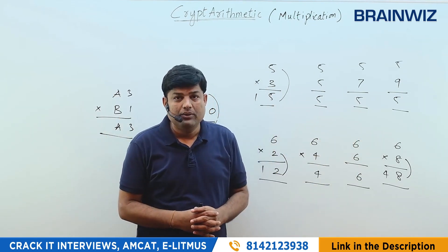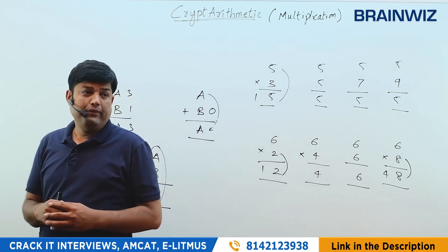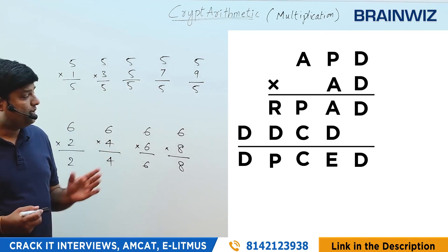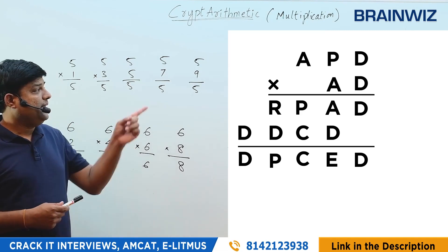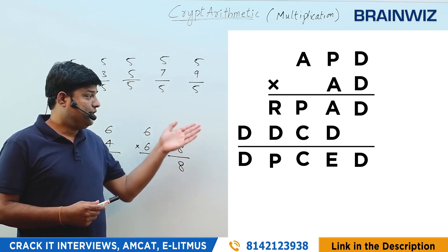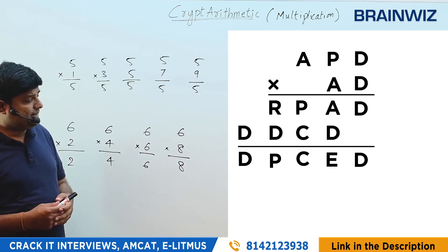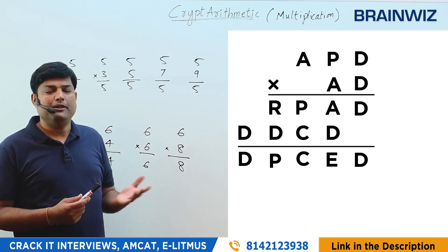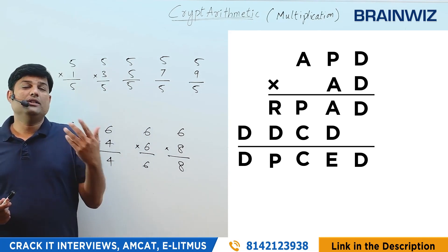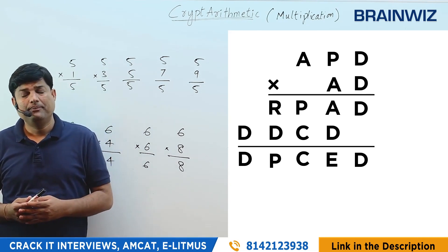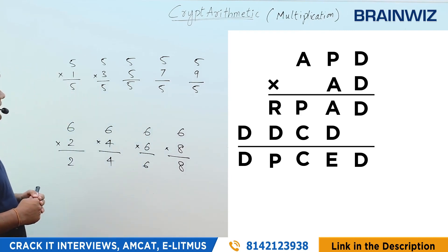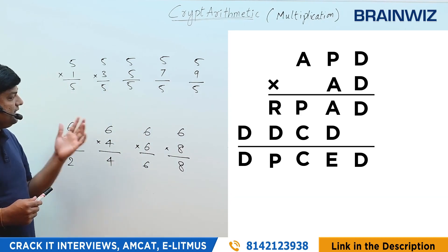These basic rules — even one small hint will give the whole picture. Now let's look at a sample question where we can apply these strategies. The question on screen shows APD is multiplied by AD to get RPAD, then DDCD, and when you add all these you get DPCED. This looks complex, but in cryptarithmetic one small hint cracks the whole problem. Copy-paste logic, as discussed in the basics of multiplication, applies here.